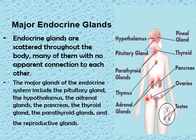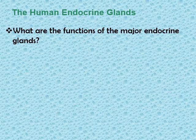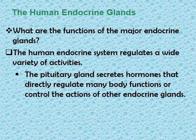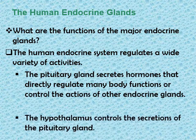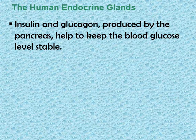The gonads are the reproductive structures — ovaries in females and testes in males. The human endocrine system regulates a wide variety of activities depending on the type of endocrine gland. The pituitary gland secretes hormones that directly regulate many body functions or control the actions of other endocrine glands. For this reason, the pituitary gland is usually considered the master endocrine gland. The hypothalamus controls the secretions of the pituitary gland. The pancreas secretes insulin and glucagon, which help keep blood glucose levels stable.